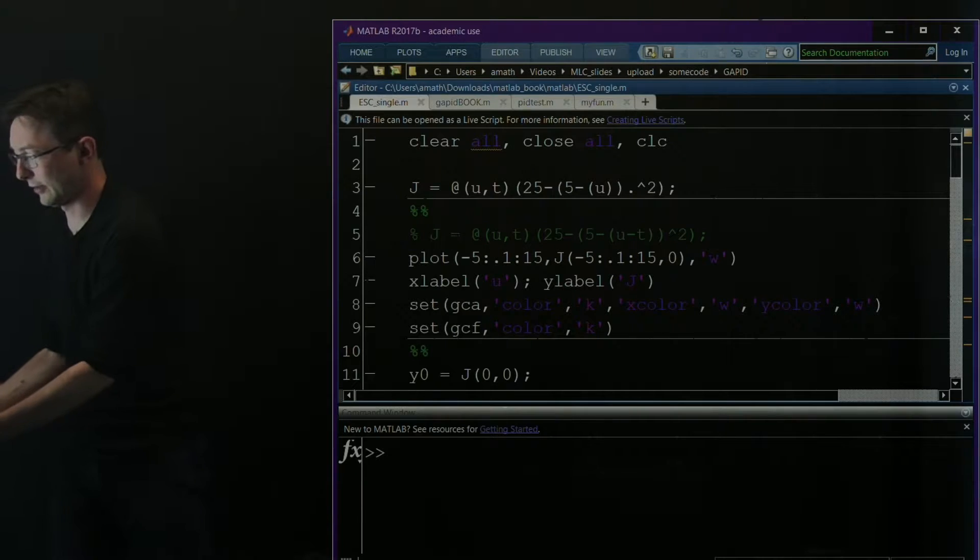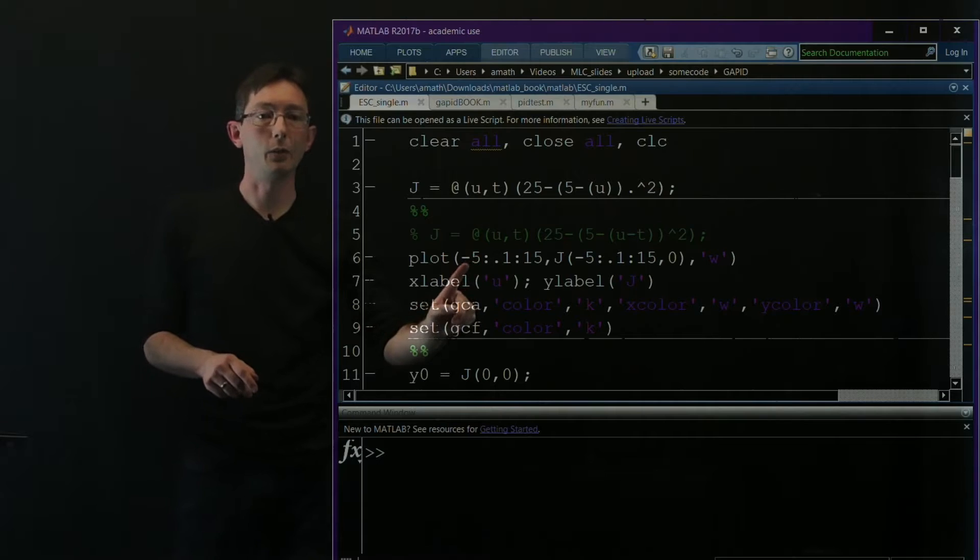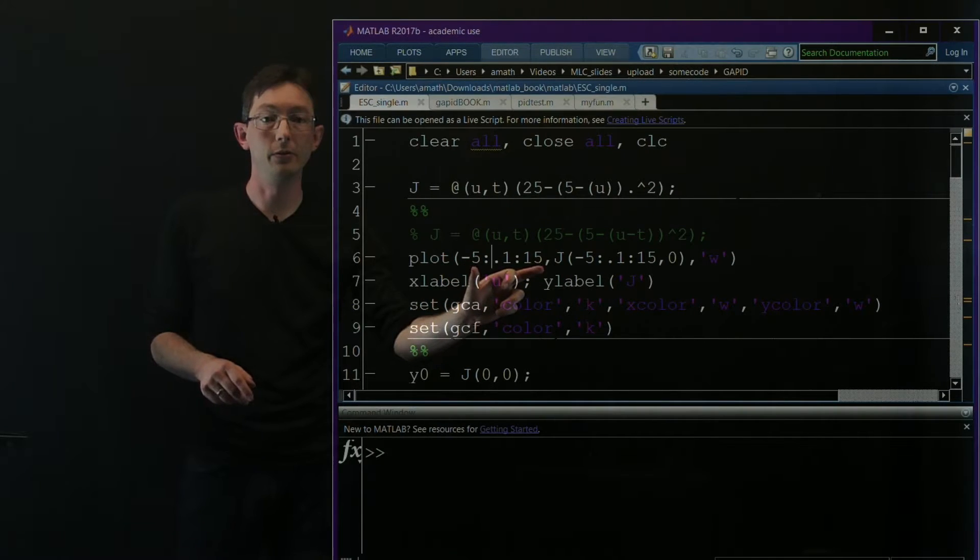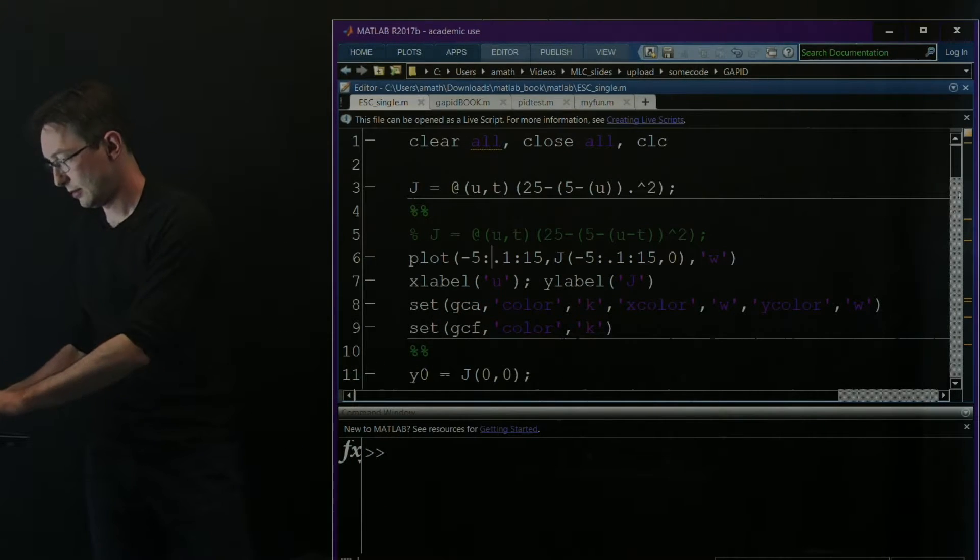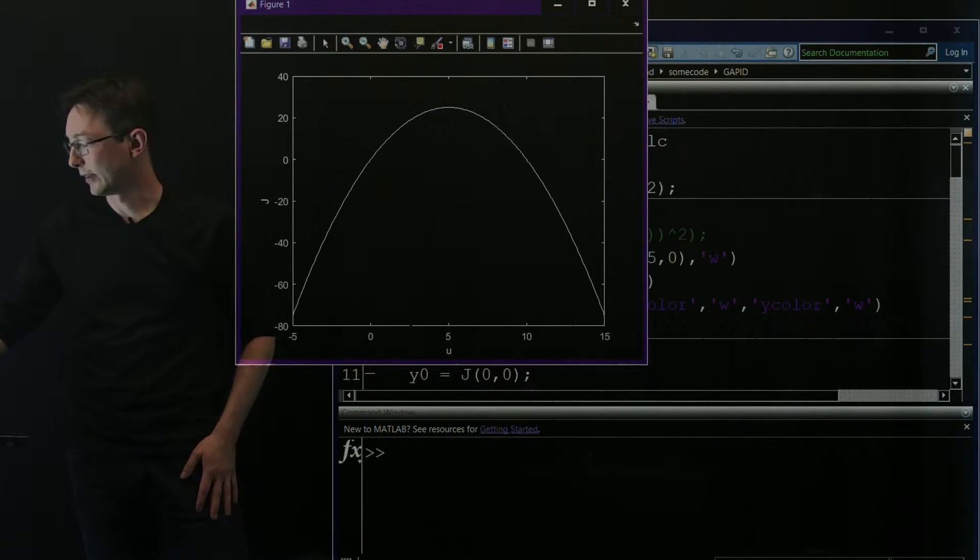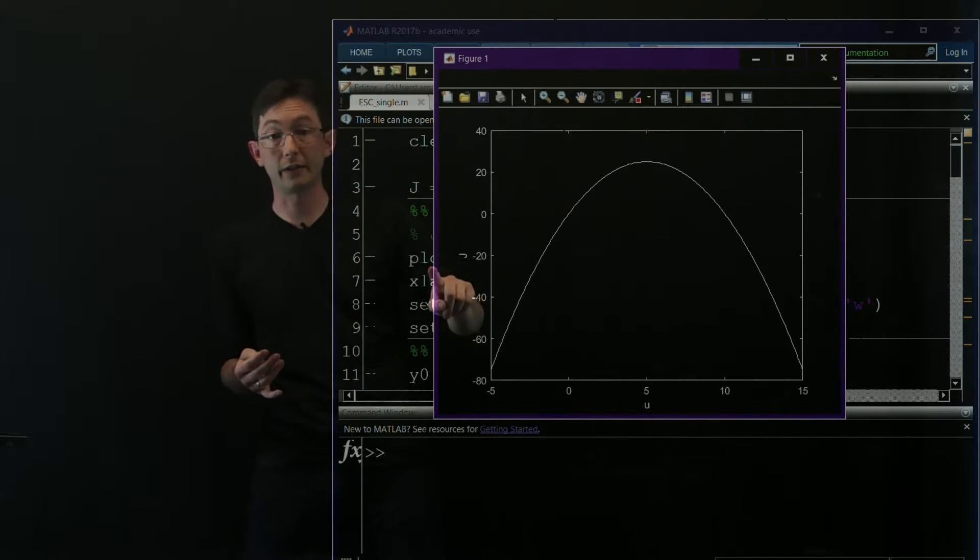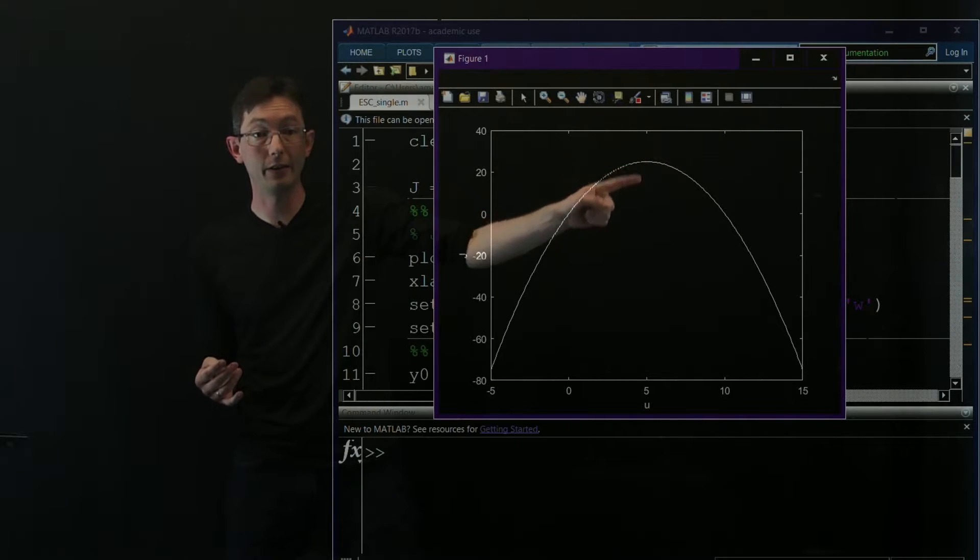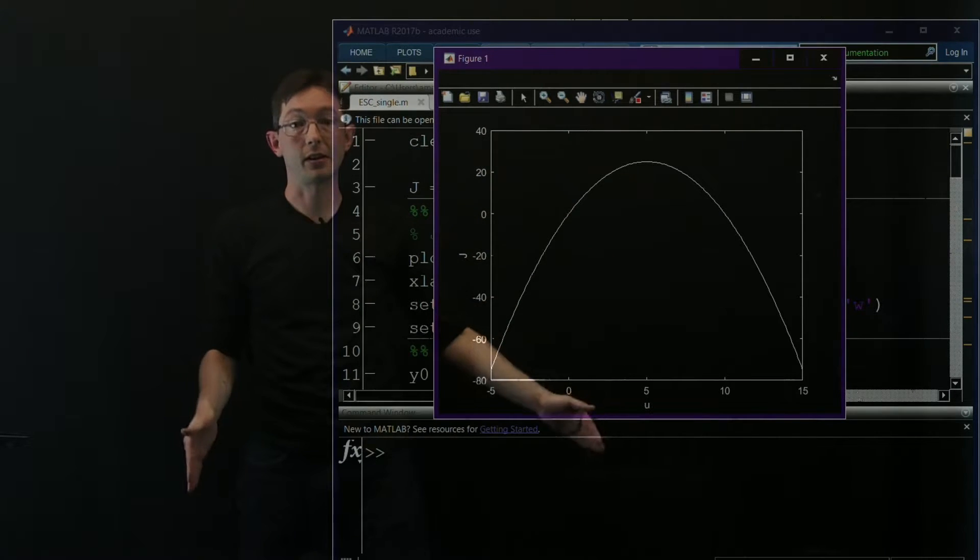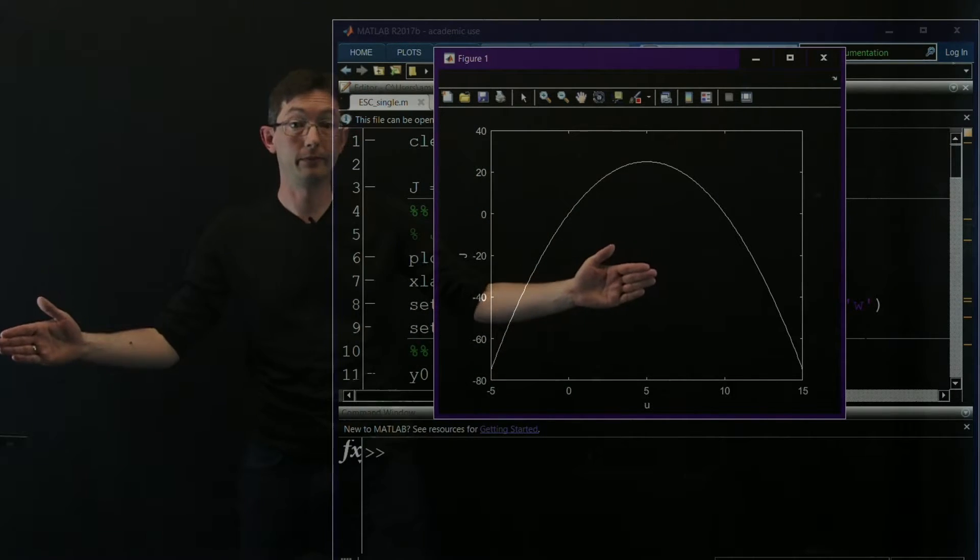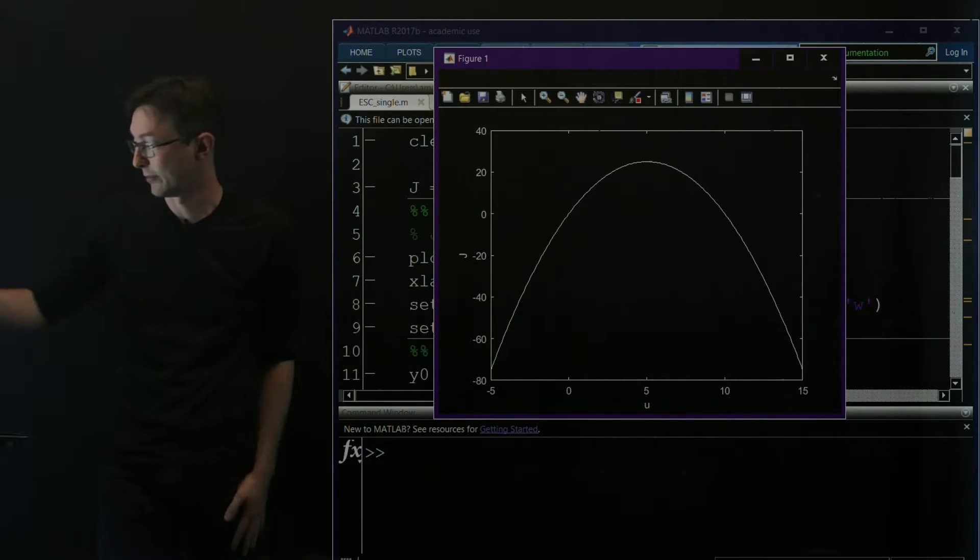Okay so let's actually run this. And now let's also plot what that objective function is for u between minus 5 and 15. You can see that this objective function j has a peak value at u equals 5, and then it quadratically falls off as u goes away from 5. This is a very simple cost function, well behaved, but illustrates the points.